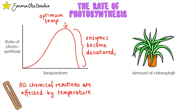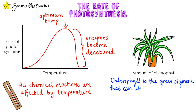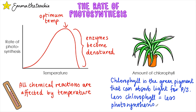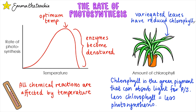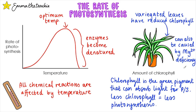The final limiting factor is the amount of chlorophyll in the leaves of the plant. Chlorophyll is the green pigment found in the chloroplast that can absorb light for photosynthesis. Reduced chlorophyll means that less photosynthesis can take place and the rate is reduced. This can happen in variegated leaves like this spider plant, which have white stripes and therefore reduced chlorophyll. It can also happen when a plant is deficient in magnesium ions, which causes chlorosis. Graphs aren't normally used for this as chlorophyll isn't a variable that can be easily changed or measured externally, but it would follow a similar shape to the light and carbon dioxide graphs.